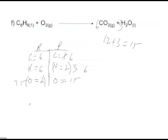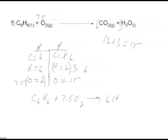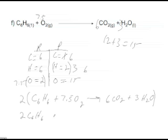2 will give me a total of 15. I will place a 7.5 here in front of the oxygen, but as we know from earlier, we can't have a decimal number as a coefficient. So, C6H6 plus 7.5 O2 goes to 6CO2 plus 3H2O. This entire equation has to be multiplied by 2, which would give me 2C6H6 plus 15O2, which goes to 12CO2 plus 6H2O.